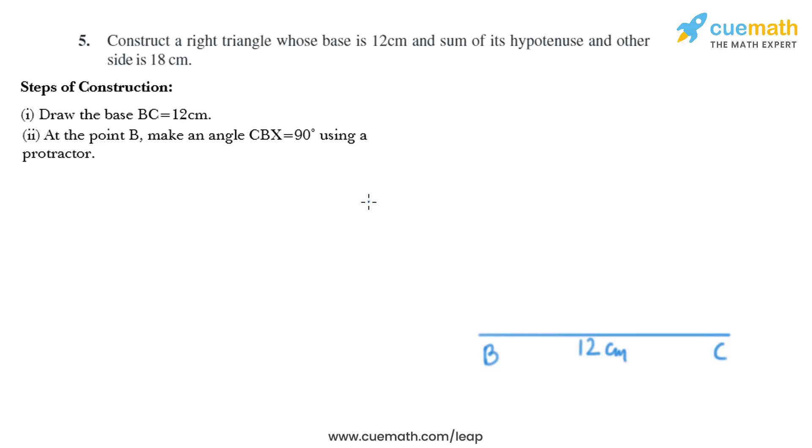So we'll put the protractor at B and we'll draw 90 degrees like this. So we'll draw a line like this and we have got angle CBX as 90 degrees.